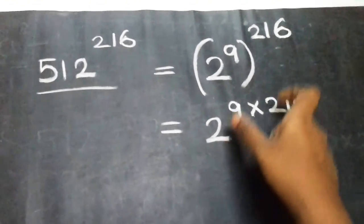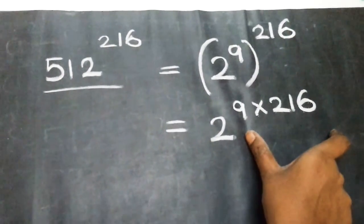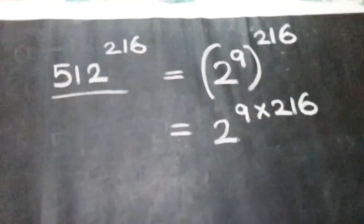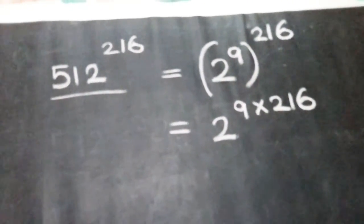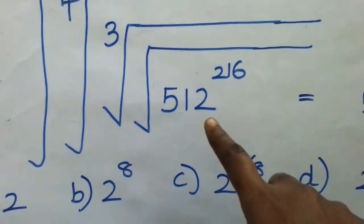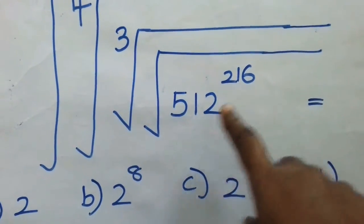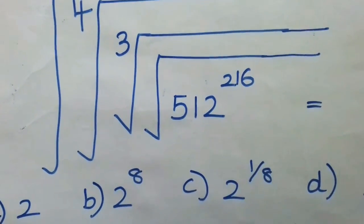So, according to the power-to-power rule, we multiply the two powers. In the next step, we have to multiply. Inside the number, we have to simplify.